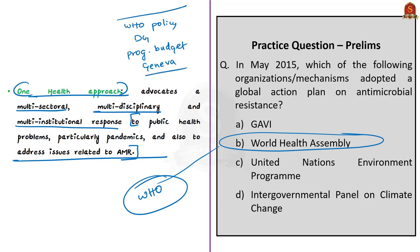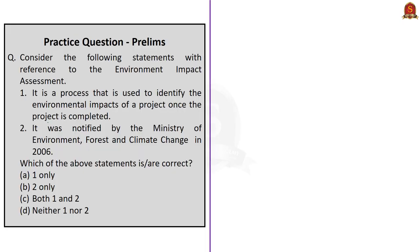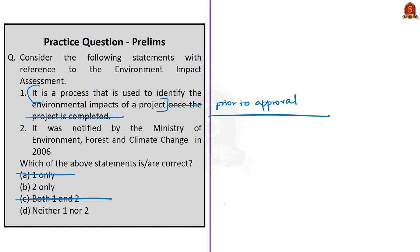With this, we have come to the end of the analysis of all news articles. Now let us move on to the practice questions discussion. Consider the following statements with reference to Environment Impact Assessment. Statement 1: It is a process used to identify the environmental impacts of a project once the project is completed. This statement is incorrect — EIA identifies environmental impacts prior to a project's approval. Statement 2: It was notified by the Ministry of Environment, Forest and Climate Change in the year 2006. This statement is correct. So the correct answer is option B, 2 only.